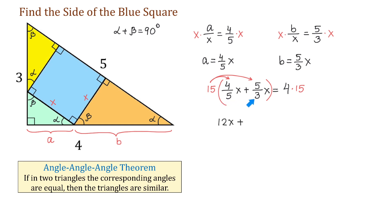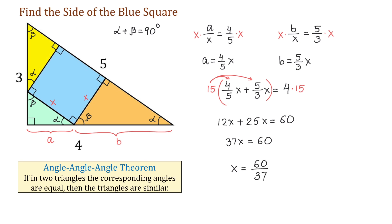15 divided by 3 is 5, and 5 times 5 is 25, so we have plus 25X equals 60. Then 12X plus 25X is 37X equals 60. Then X equals 60 over 37, and this is the side of the square.